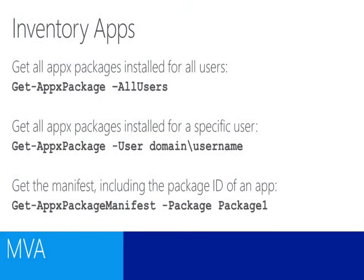OK, so we've had a look at installing and sideloading an app using the Add-AppxPackage commandlet. Let's have a quick look at listing apps that are already installed on the device. There are a few different commandlets and switches we can use here. The first is Get-AppxPackage. In this case we can say -AllUsers and that will give us all of the APPX packages that have been deployed to all of the users on this particular device.